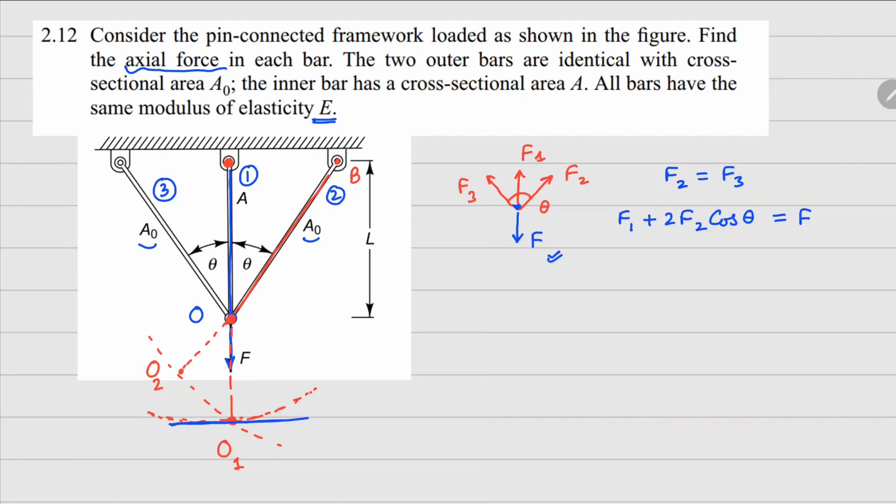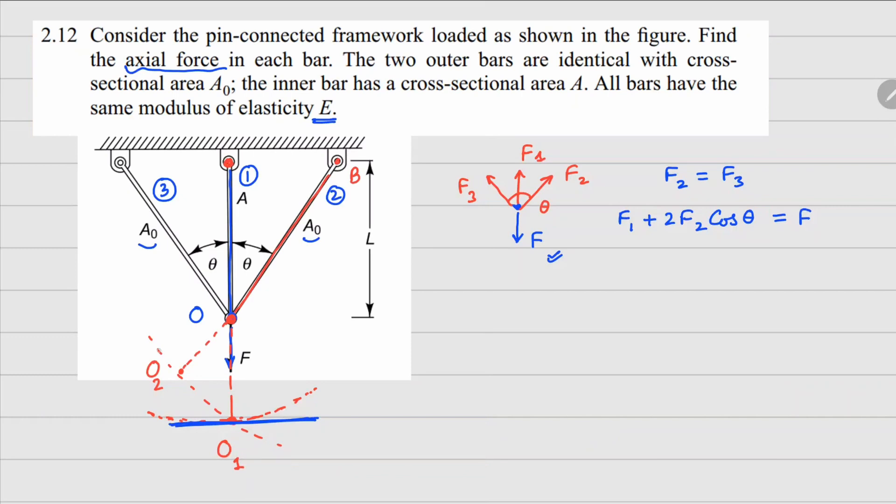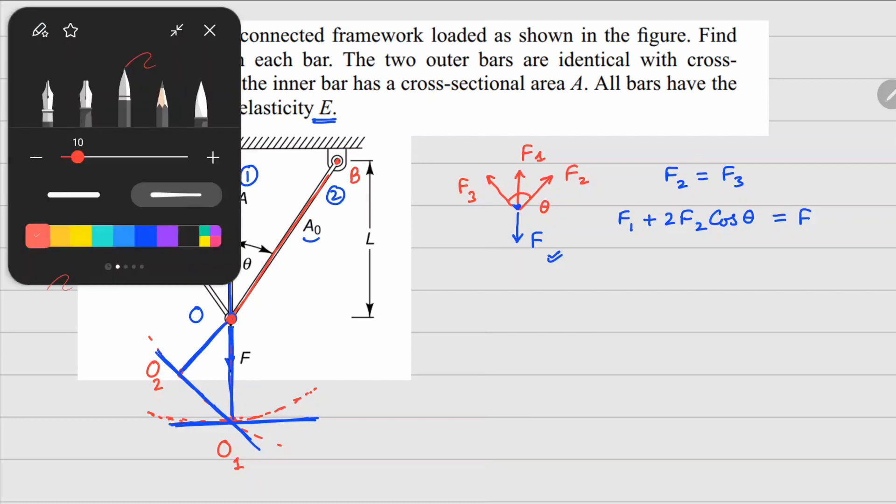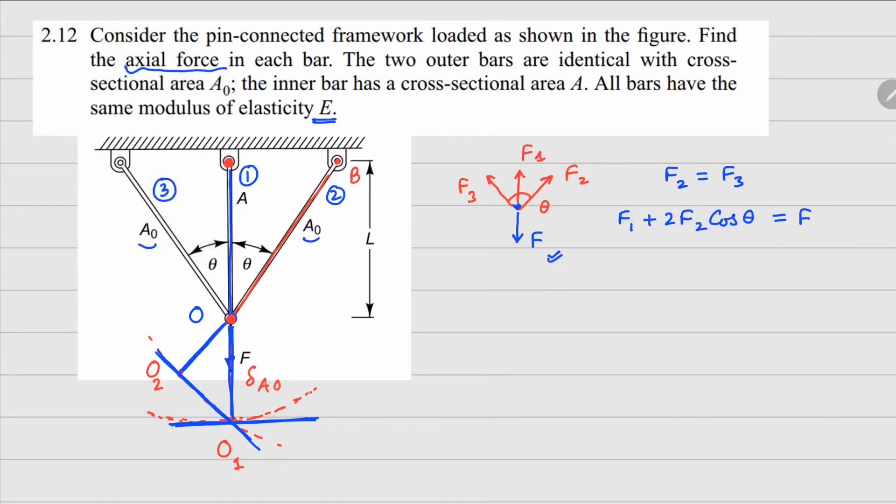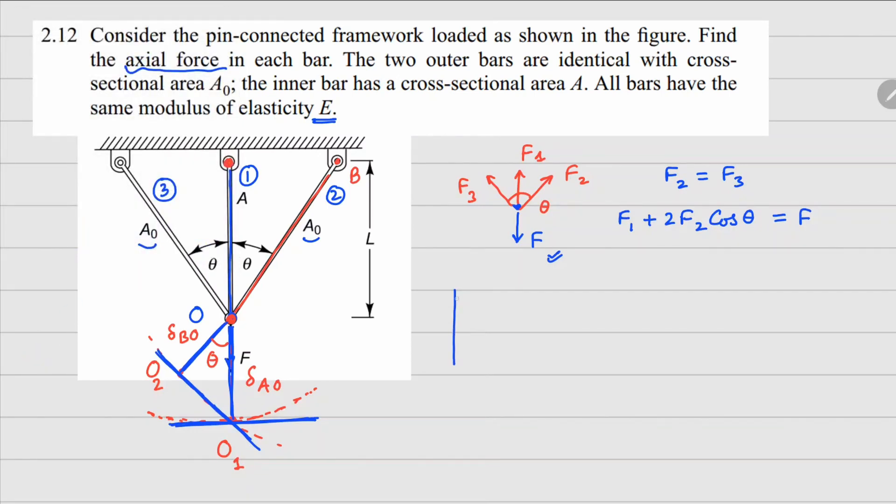Now how do we find the relationship between these two deformations? If I approximate these two circles with straight lines, assuming that these deformations are small, this can be drawn as a straight line here. Within this, these are the two deformations that we are interested in. This one right here is delta from AO member, and this one right here is delta from member BO. This angle right here is theta, so if I separate this angle out, I will have a triangle where this one is delta AO and this one is delta BO.